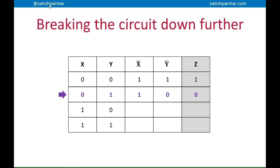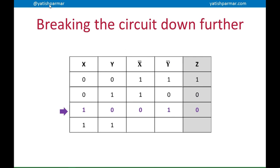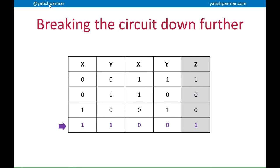Here, second row, X is 0, Y is 1, NOT X is going to be 1, NOT Y is 0 because they're being inverted. And Z is going to be 0, similar for when X is on and Y is off. And then when both of the inputs are true, both of the inputs are on, NOT X is 0, NOT Y is 0, and Z is 1.